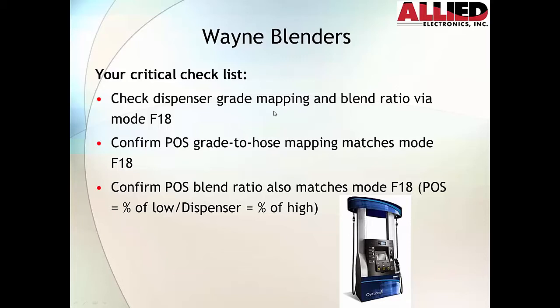We're going to give you an example of that a little bit later in this presentation. You want to confirm the POS grade to hose mapping matches mode 18 — so whatever mode 18 has, the POS has to match exactly. And then finally, we're going to look at the blend ratio, which mode 18 will show us, and the blend ratio record from the POS needs to match.